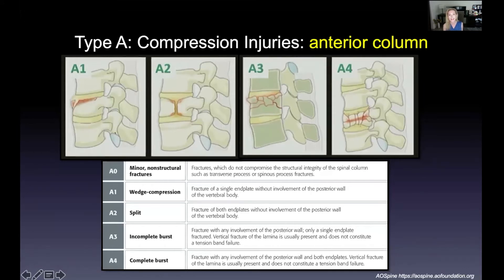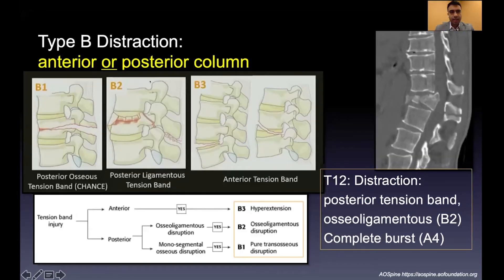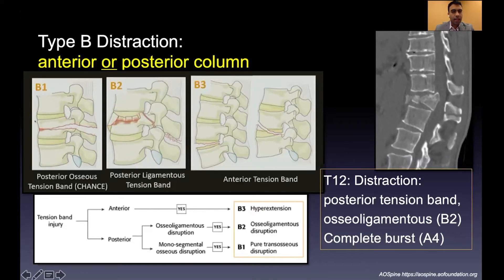Type B fractures on the AO Spine scale generally involve the posterior ligamentous complex, except for Type B3 which involves the anterior and middle columns via hyperextension. B1 is a posterior osseous tension band injury, B2 is a pure ligamentous or chance-type fracture — a hyperflexion injury over a fixed point anterior to the instantaneous axis of rotation.